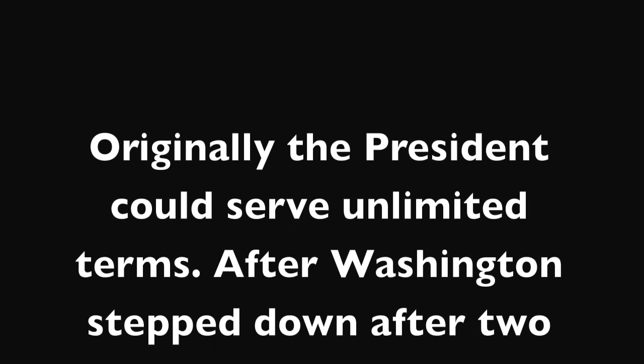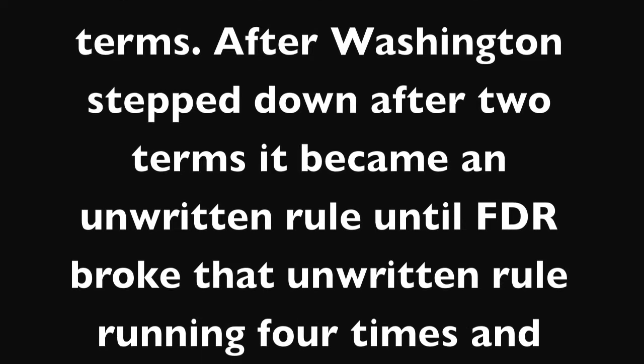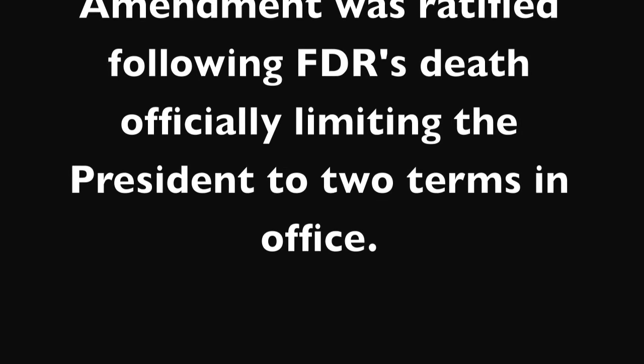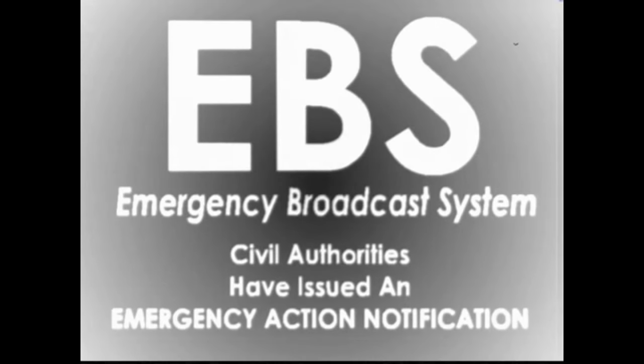Originally the president could serve unlimited terms. After Washington stepped down after two terms it became an unwritten rule, until FDR broke it by running four times and winning. The 22nd Amendment was ratified following FDR's death, officially limiting the president to two terms. To review: the president is commander-in-chief; he can sign laws and veto them — vetoes can be overridden by two-thirds majority in both houses; he can sign treaties, which must be approved by the Senate by two-thirds; and he can pardon people.